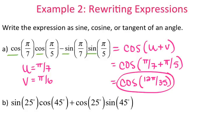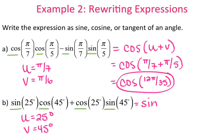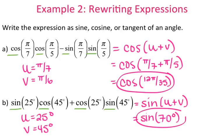For my second one, my u is 25 degrees and my v is 45 degrees. What I'm looking at is sine cosine plus cosine sine. Looking at my formula sheet for sine cosine plus cosine sine, that is sine of u plus v. My u is 25 and my v is 45, so 25 plus 45 is 70 degrees. So that is going from the expanded version of the sum and difference to the condensed one.